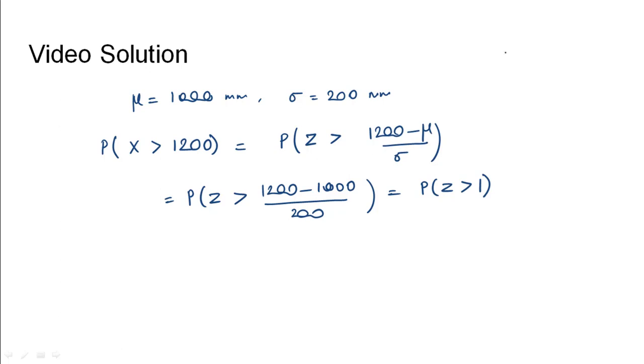It can be seen from the normal distribution graph that the value of Z is 0 at the center, less than 0 on this side, and greater than 0 on this side. So the value of Z equals 1 will be somewhere here, and we need to find the probability that the value will be greater than this.